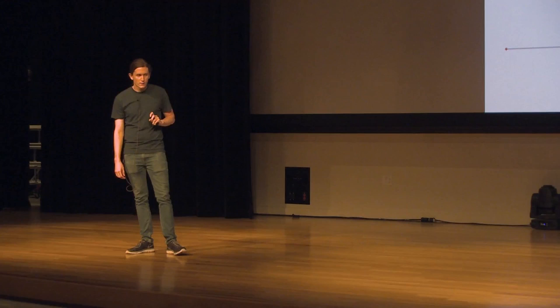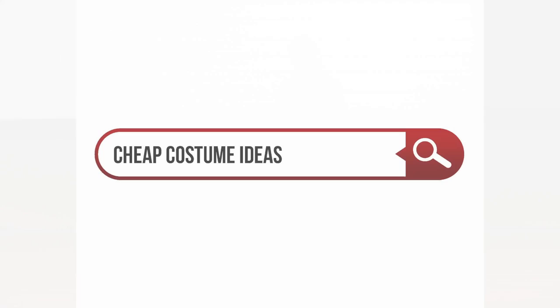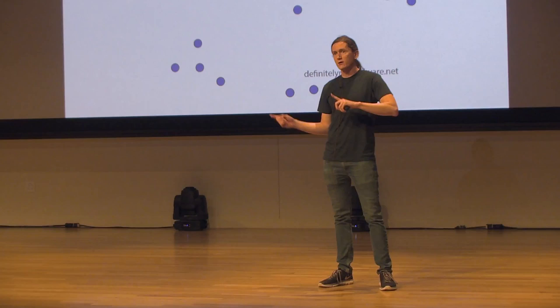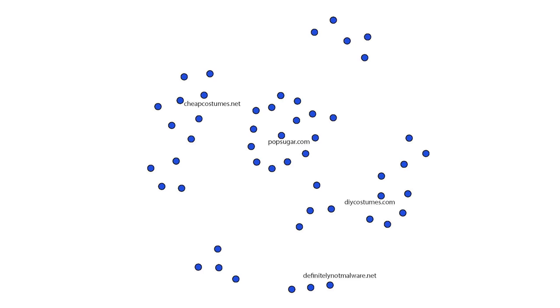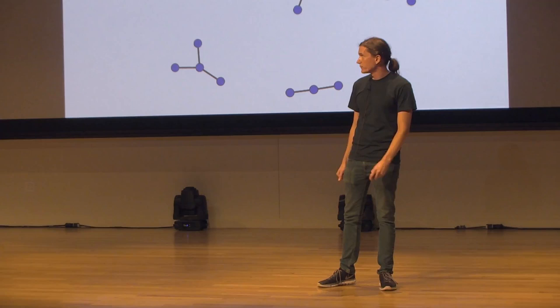We can also ask questions like, what's the most important point — what's the most highly connected? That's precisely how the first successful search engines worked. You'd enter in keywords like 'cheap costume ideas,' the server would bring up all the websites relating to that topic, those websites become the points of our network, and we connect two points if one website links to another. More important websites will have better connections and be more central in the network. So we go from something nebulous like 'what's the most relevant website' to something very clean and clear that a computer can do in a fraction of a second.